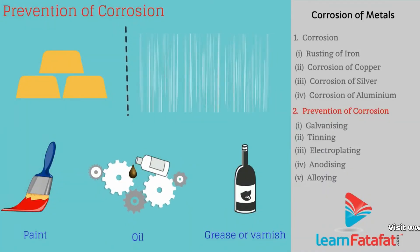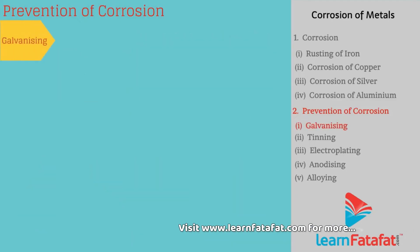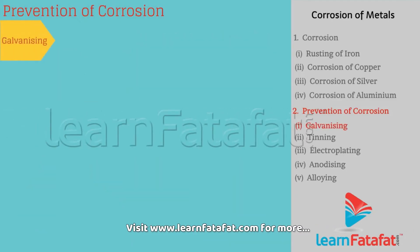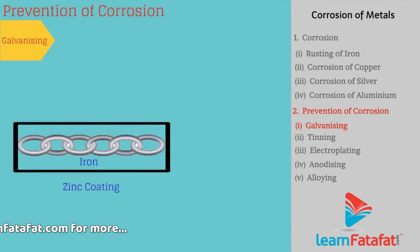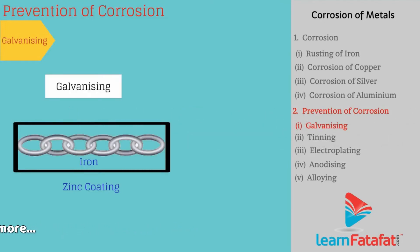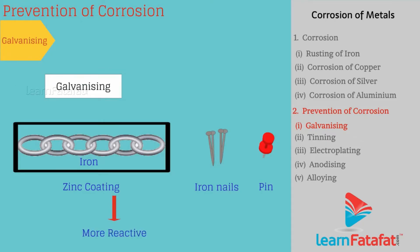Similarly, other methods include galvanizing. The process of forming a thin coating of zinc on iron or steel is called galvanizing — for example, shiny iron nails, pins, etc. Since zinc is more reactive than iron, it gets corroded, thereby preventing corrosion of iron.